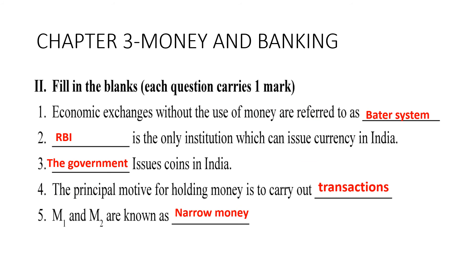Chapter three: money and banking. First: economic exchanges without the use of money are referred to as the barter system — goods are exchanged for goods.